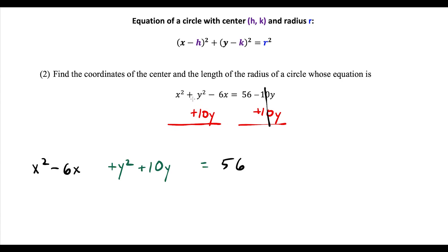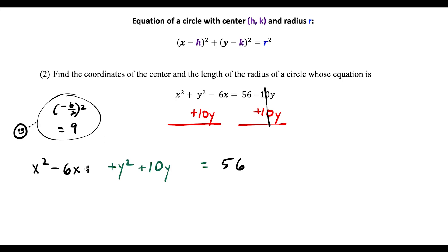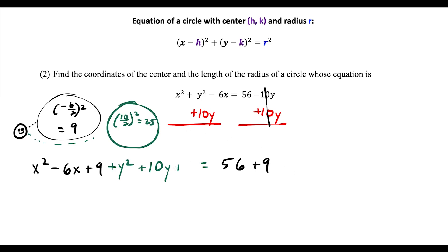Now we complete the square. For the x expression, half of the b term: negative 6 divided by 2, squared, gives us positive 9. So we add 9 to both sides. For the y expression, half of 10 is 5, and 5 squared is 25. So we add 25 to both sides.